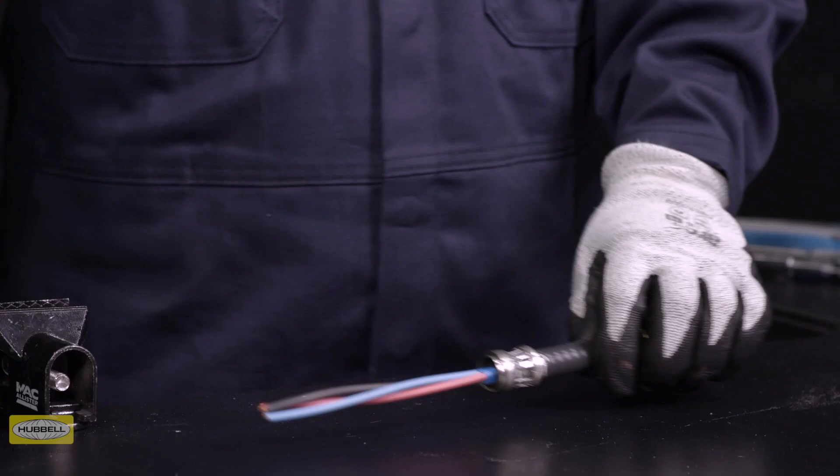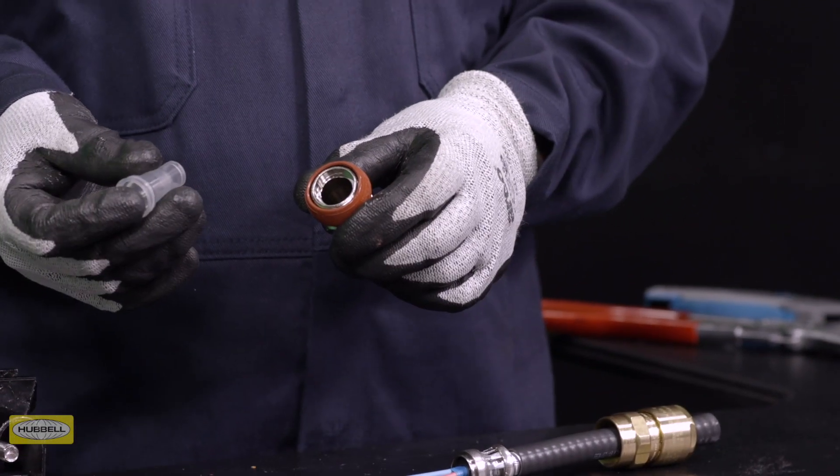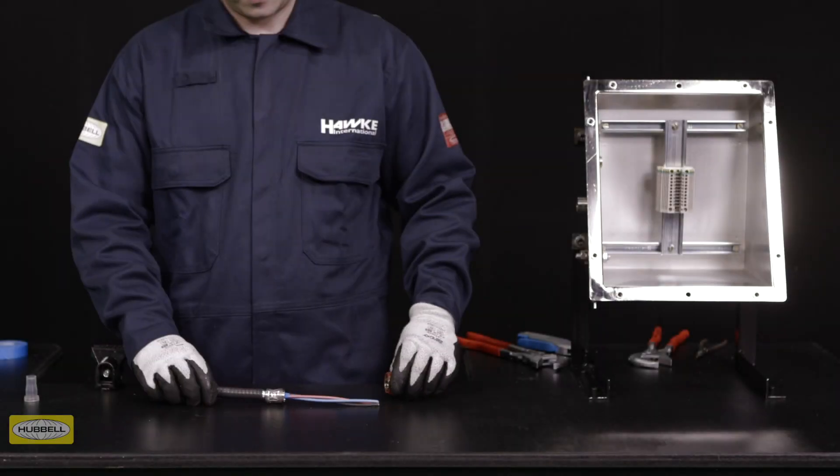Remove the tape. Ensure that the compound pot is removed from the assembly. Slide the entry over the cable.